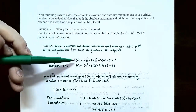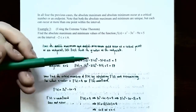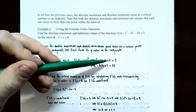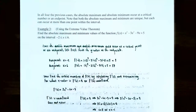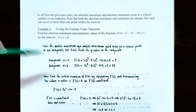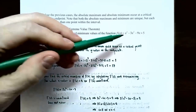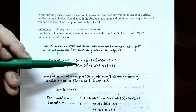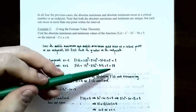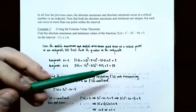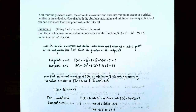Substituting the endpoints into the original function: f(−2) = (−2)³ − 3(−2)² − 9(−2) + 5 = 3. And f(6) = 6³ − 3(6²) − 9(6) + 5 = 59. So y equals 59 at x equals 6 might be the absolute maximum, but we can't confirm until we also check the critical numbers, since the top of the graph may be even larger than 59.